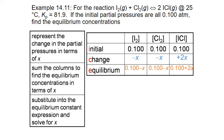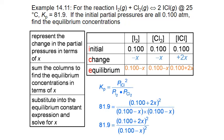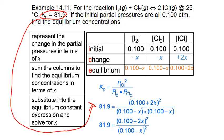These equilibrium terms are substituted into the equilibrium expression along with the given K sub P value. K sub P equals the partial pressure of the product squared divided by the partial pressures of the reactants. Substituting in gives 81.9 equals 0.100 plus 2X, quantity squared, divided by 0.100 minus X times 0.100 minus X — which condenses to 0.100 minus X squared on the bottom.